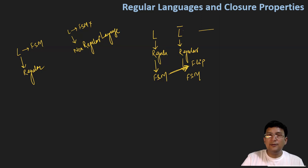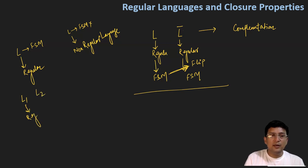This means that the class of regular languages are closed under complementation. Then we have also seen that if we have a language L1 and a language L2, L1 is regular and L2 is regular, so their concatenation will also be a regular language.